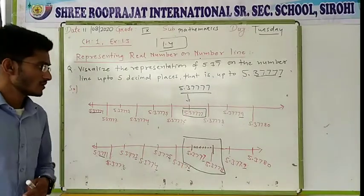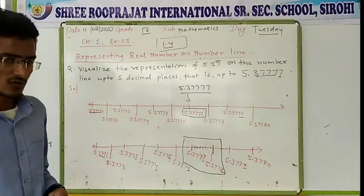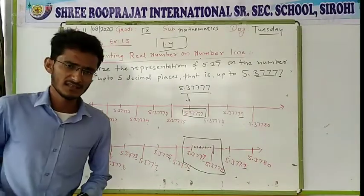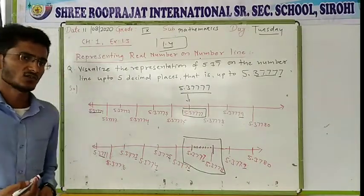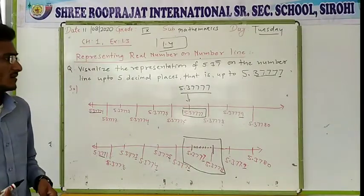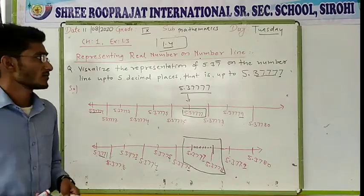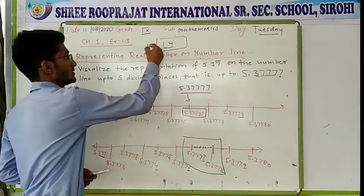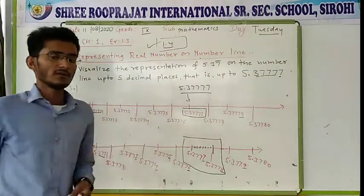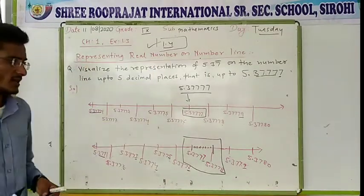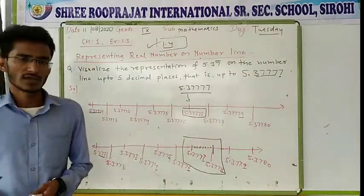So we have to draw almost 4 or 5 number lines. Complete the question from exercise 1.4. Thank you.